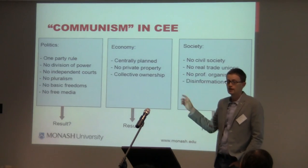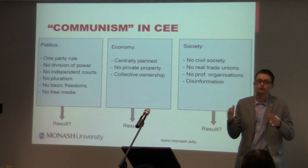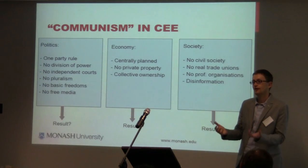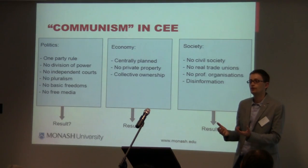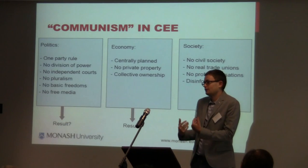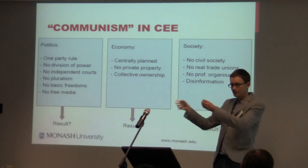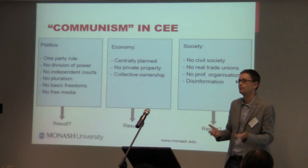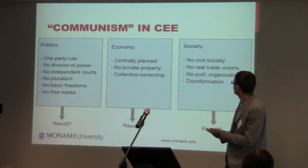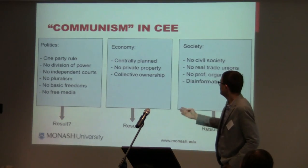And then there was also society. As I said, there were no NGOs, and there were no real trade unions. There were trade unions of course, but they were again part of the governing regime. So the trade unions couldn't do what they normally would — protect the workers — because they were actually part of the government. And there were no real professional organizations, nothing like that.